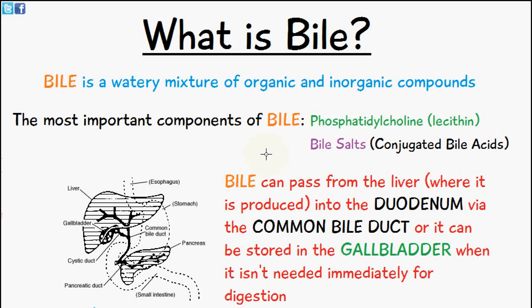Bile is a watery mixture of organic and inorganic compounds. The most important components of bile are phosphatidylcholine, otherwise known as lecithin, and bile salts, which are conjugated bile acids. The following video will be looking at bile acids and bile salts, so if you don't understand that just yet, watch this video and then the following videos after this and it should make sense.